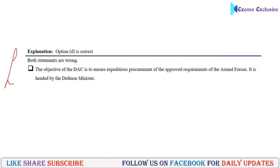Here is the complete explanation: both statements are wrong. The objective of the DAC is to ensure expeditious procurement of the approved requirements of the armed forces, and it is headed by the Defense Minister. This is an important explanation to remember.